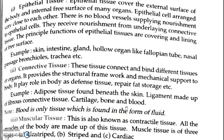Connective tissues separate and support all other types of tissues in the body. This tissue connects and binds different tissues and organs together. It provides the structural framework and mechanical support to the body. It also plays a role in defense, tissue repair, and fat storage.